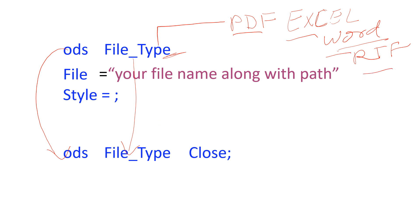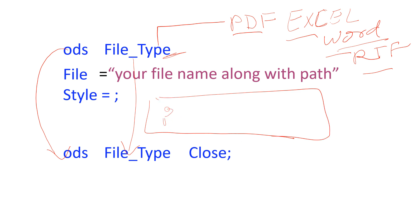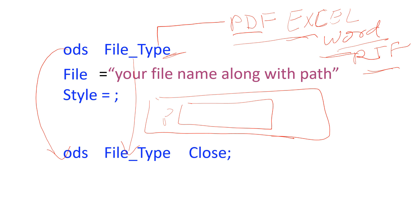This structure helps you produce SAS output in a different application, but you also need to provide what output to produce. In between the opening and closing ODS statements you can perform any SAS activity — proc means, proc report, proc summary, proc SQL, or a data step — and whatever output comes from that will be produced in your chosen application. Let me take you to SAS and explain with examples.